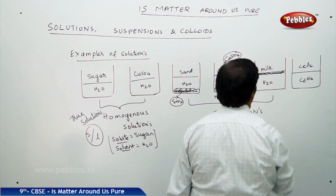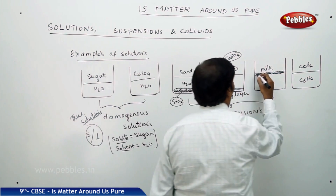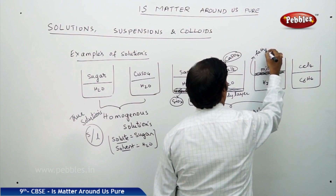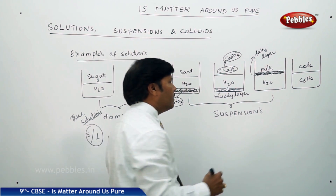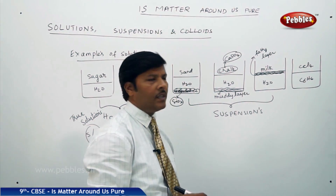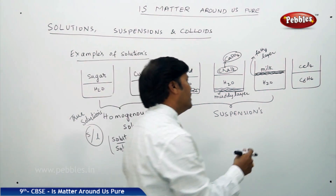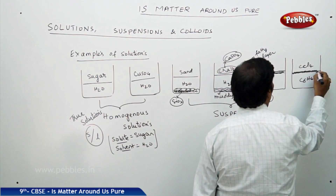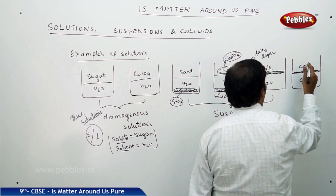Milk is made up of water and dissolved fats — fat forms a fatty layer on top. Carbon tetrachloride and benzene are both organic solvents. C₆H₆ is benzene, and carbon tetrachloride is also an organic solvent, so you can find a layer of immiscibility between them.